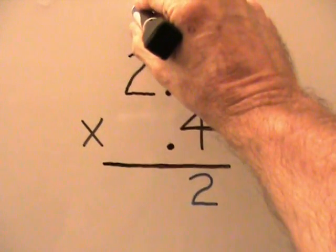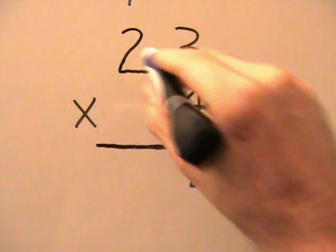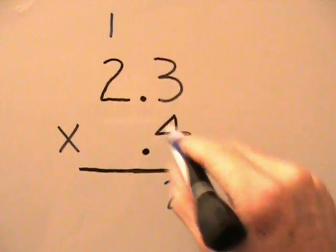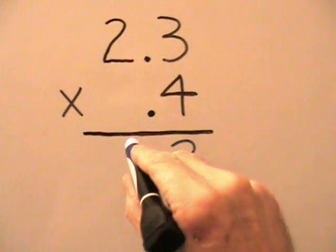We carry the 1, which represents the tens. We multiply 2 times 4 to get 8, add our 1, this gives us 9.